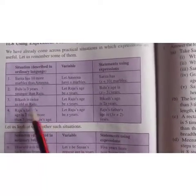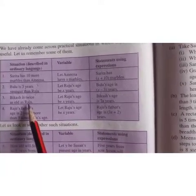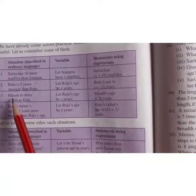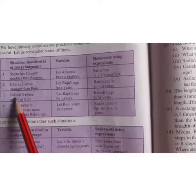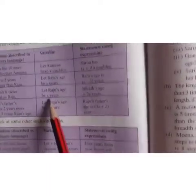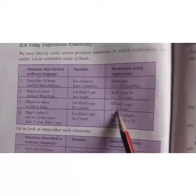Bikash is twice as old as Raju. So first, you will take Raju's age as X years. Then what will be the age of Bikash? It will be 2X, that is twice of Raju. When Raju is X, twice of it, that is 2 times of it, becomes 2X.